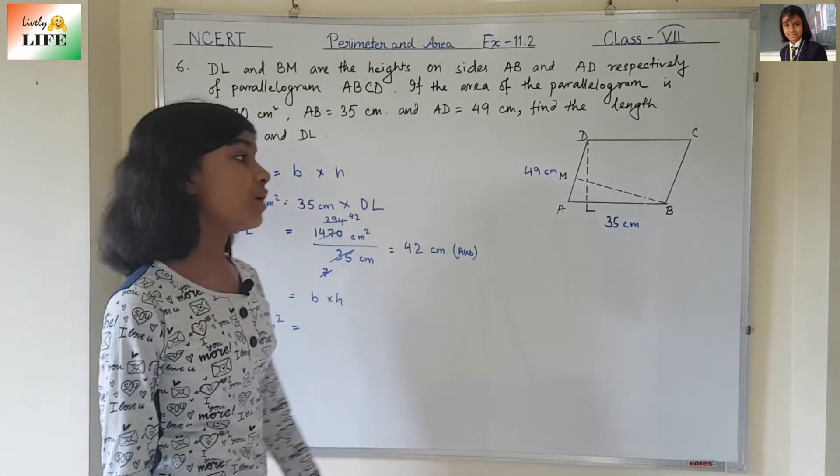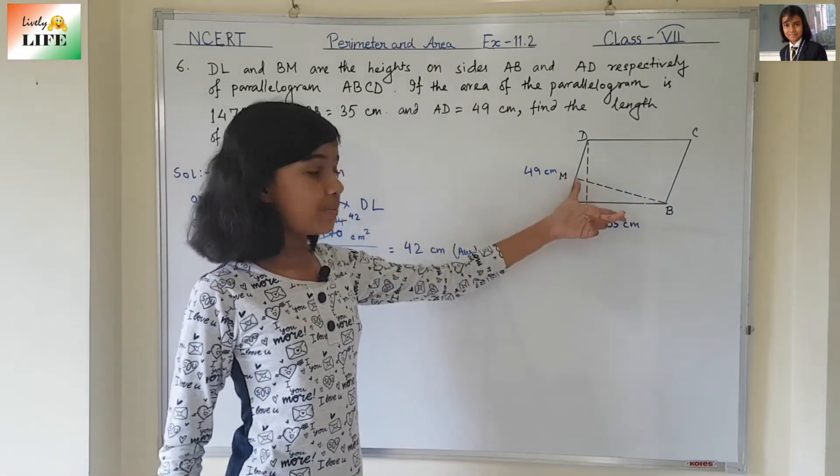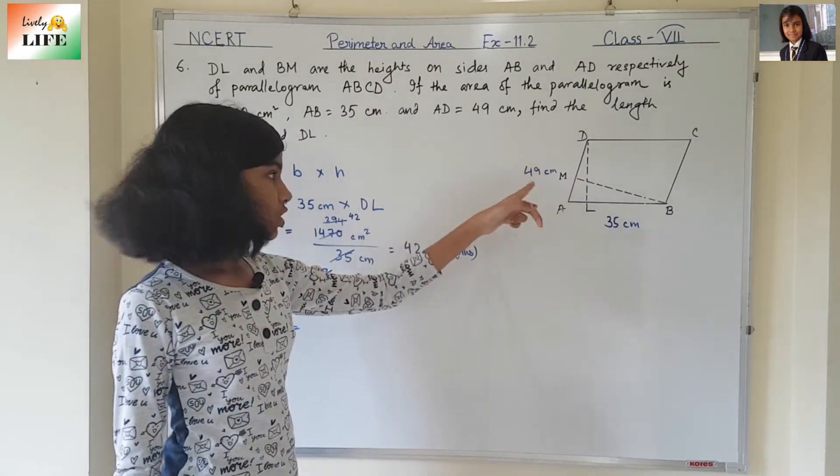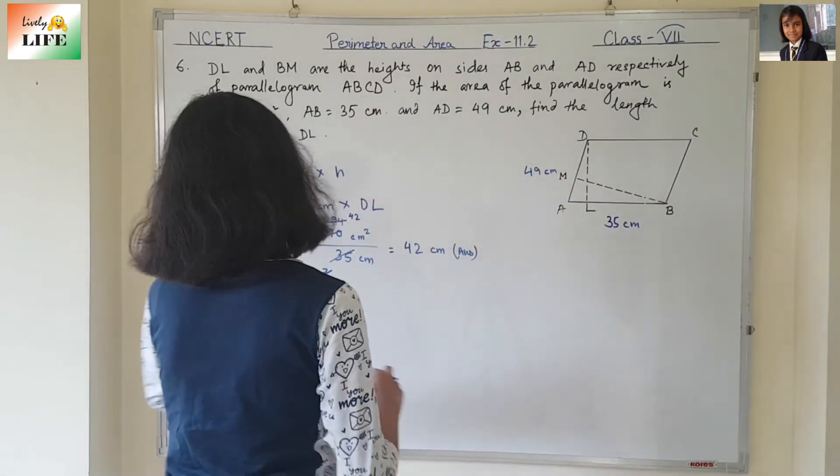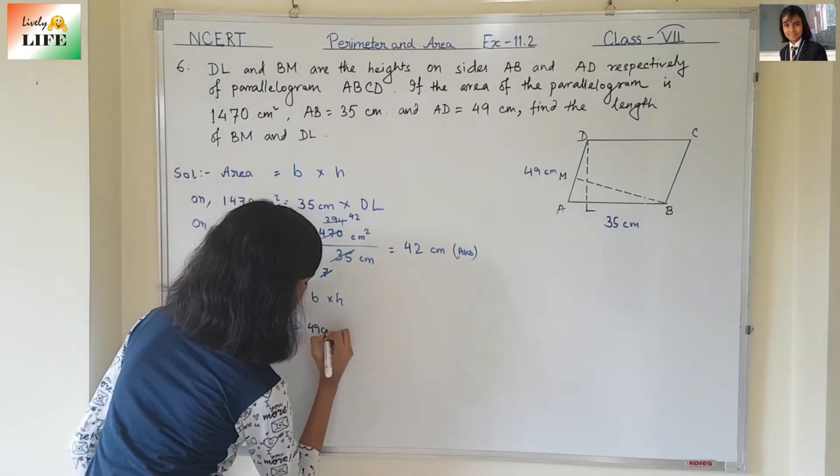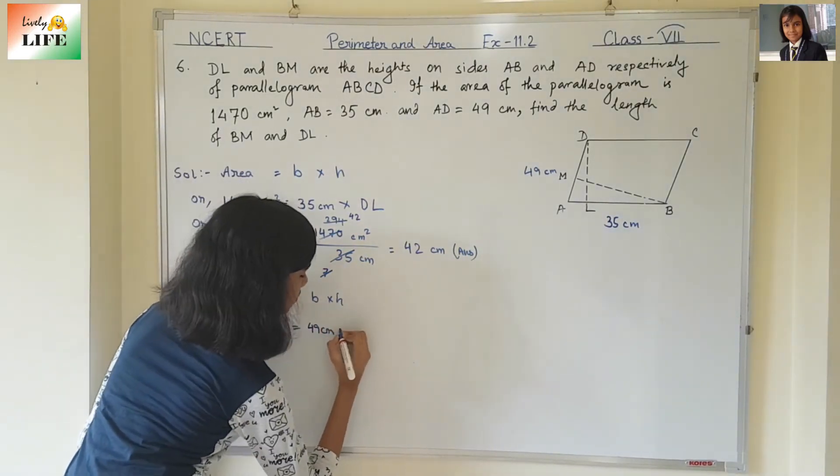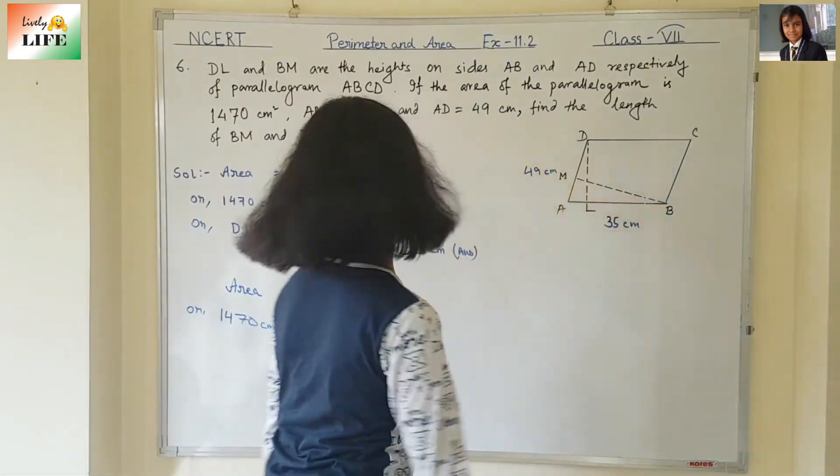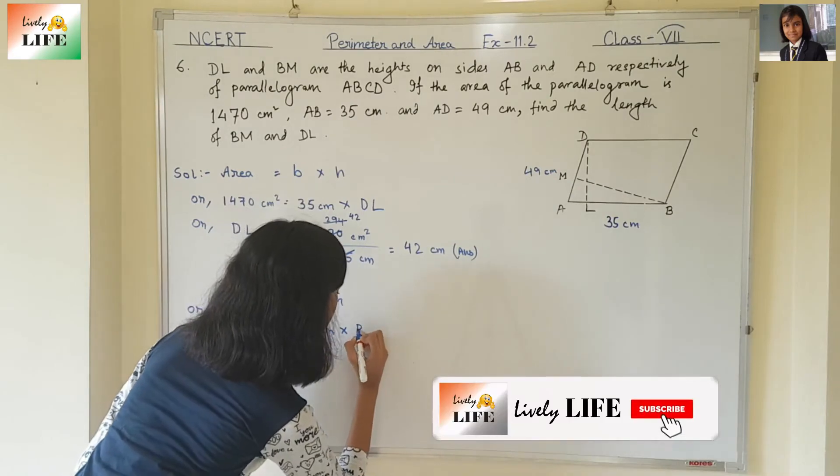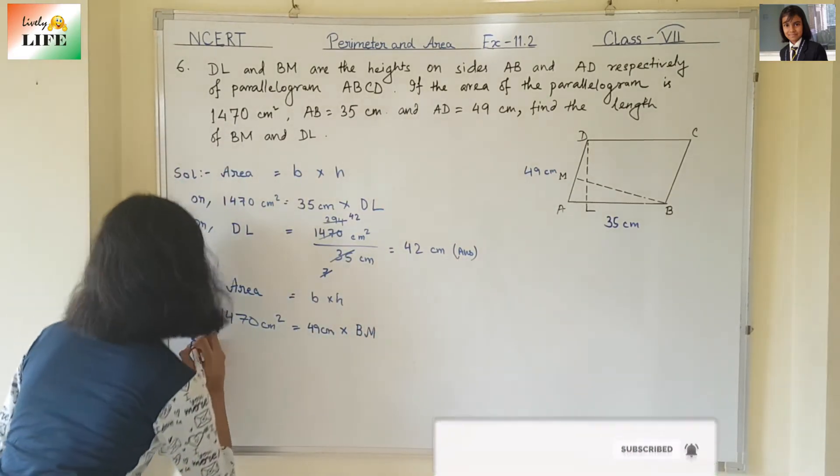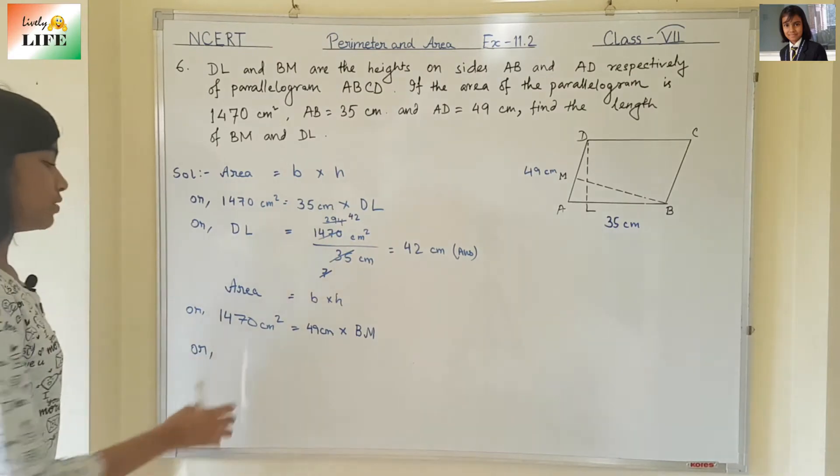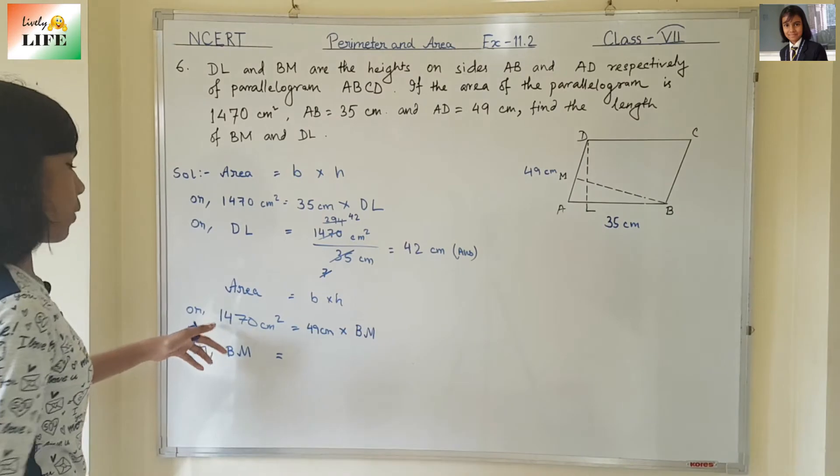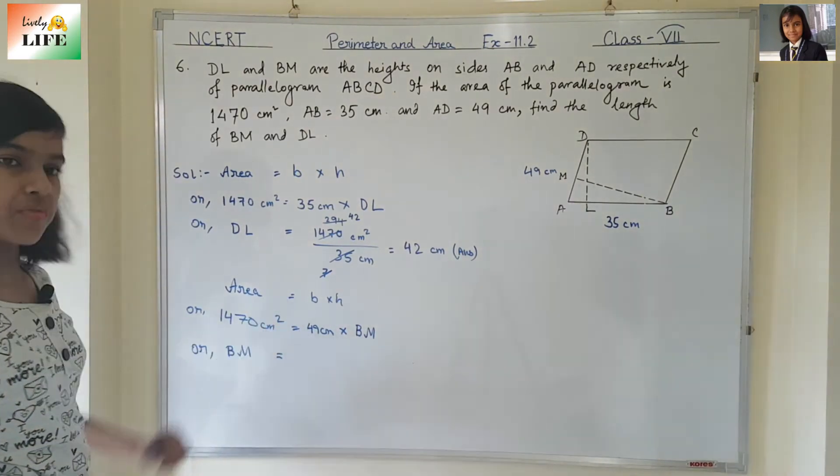Base is also given. We need to find out BM. If BM is the height, then which is the base? AD is the base. AD's length is 49 cm. Height is BM. BM is equal to 1470 cm squared divided by 49 cm.